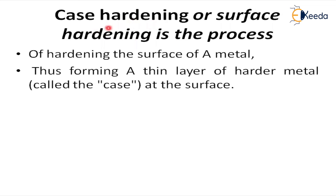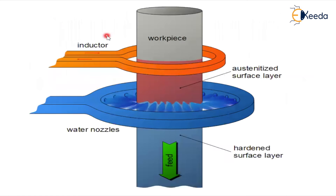Surface hardening is also referred to as case hardening. The process forms a thin layer of harder metal on the surface, which is why it is called case hardening. In one surface hardening technique, only the layers you want to harden are treated — using an inductor or heat treatment applied only to that particular area. The material is heated until it reaches the austenite surface layer, and then cooled using water nozzles.